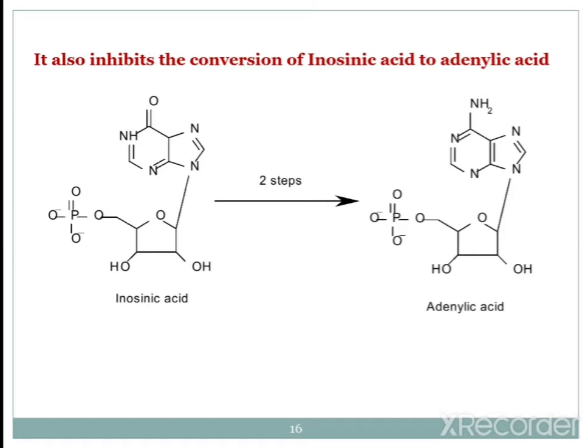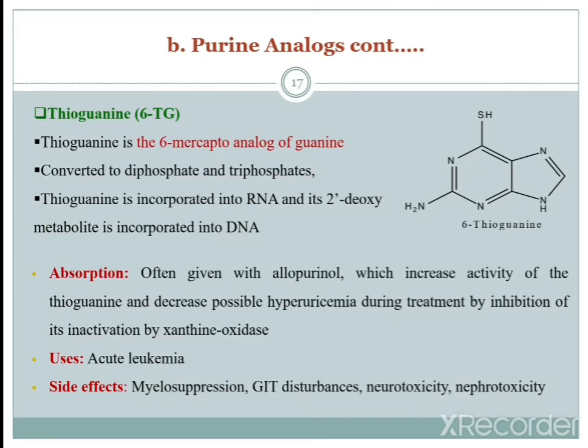6-Mercaptopurine also inhibits the conversion of inosinic acid to adenylic acid. Normally, inosinic acid is converted to adenylic acid in two steps, and 6-mercaptopurine inhibits this process. This represents one additional mechanism of action of 6-mercaptopurine.